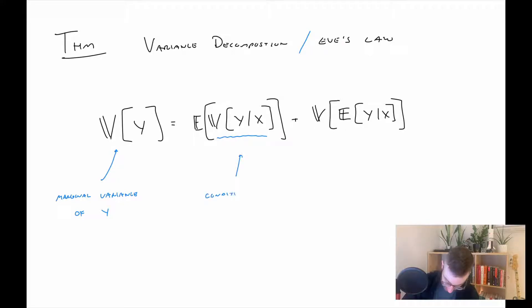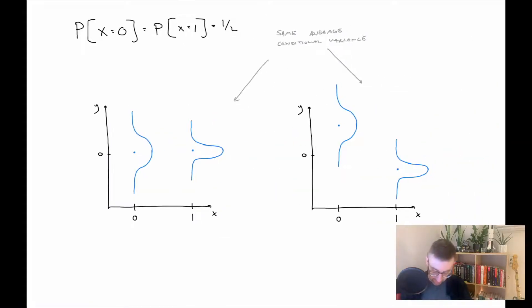Now I want to note that inside of this first expectation, this quantity here, this is the conditional variance of Y given X. And inside here, this expectation here, this is the conditional expectation of Y given X. So essentially what this does is it relates the marginal variance to the conditional variance. So basically the marginal variance is the average conditional variance, but then it's also plus the variance of the conditional average. Now why you need that second term might not be immediately clear.